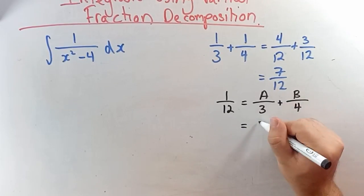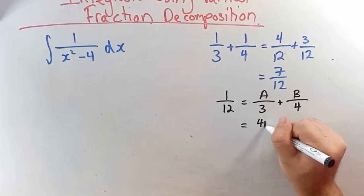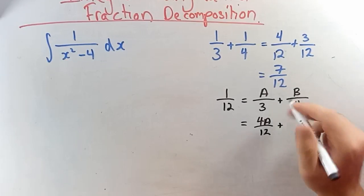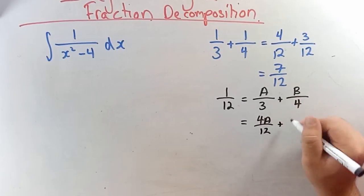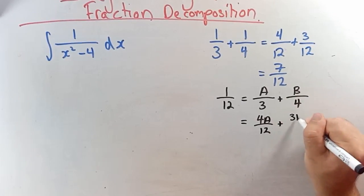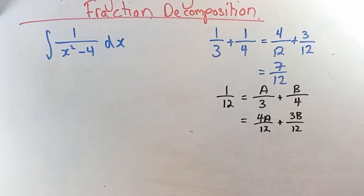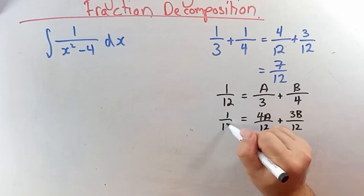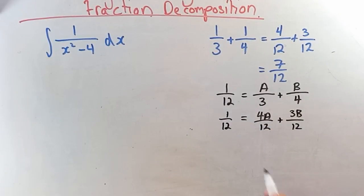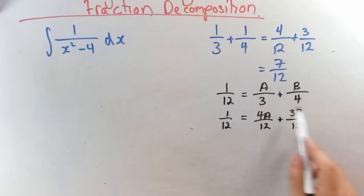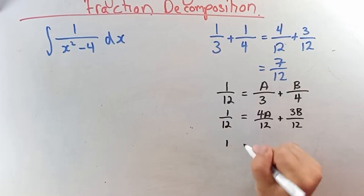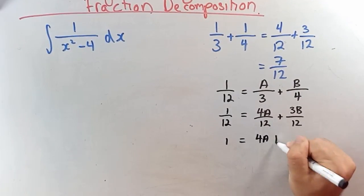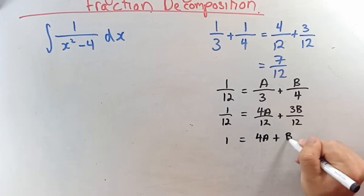We can cross multiply: 4a on 12 plus 3b on 12 has to equal 1 on 12. Looking at the numerators, we need 4a plus 3b to equal 1.